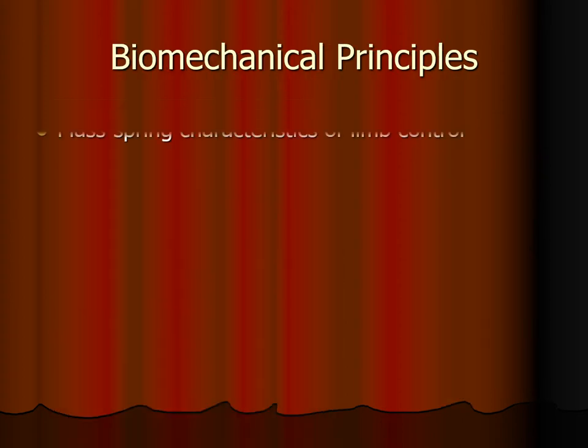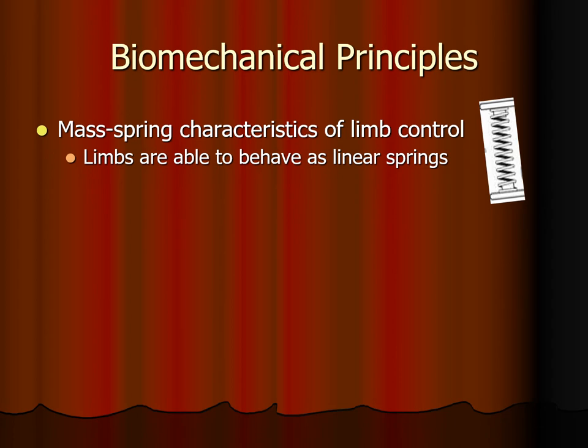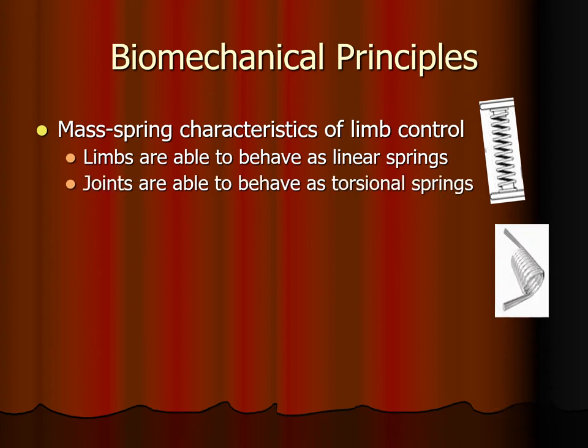Our limbs — such as our legs when we're walking, running, or hopping — behave like springs. Our whole limb behaves as a linear spring, as shown in the diagram. For instance, if we're running, that spring of our leg compresses, and then as we push off from the ground, it recoils.